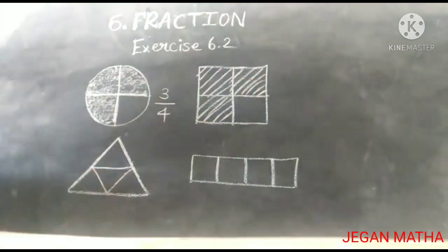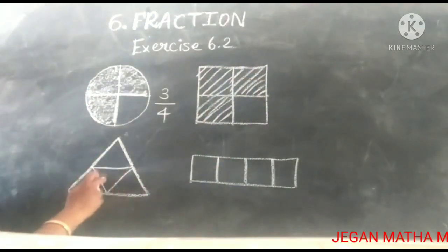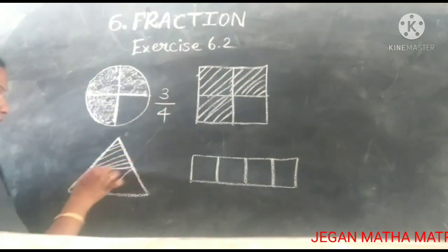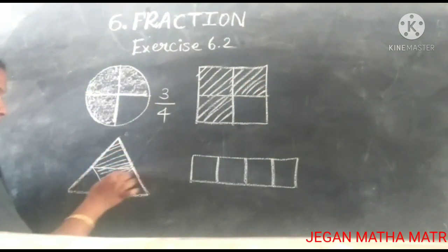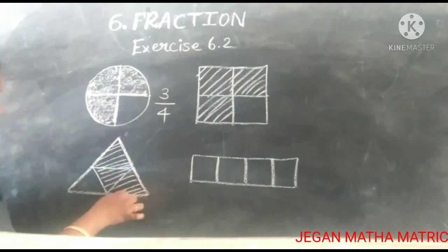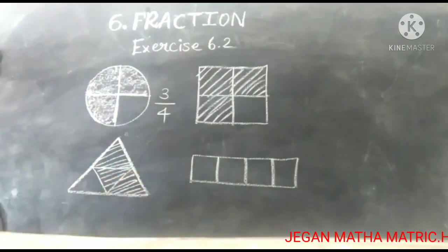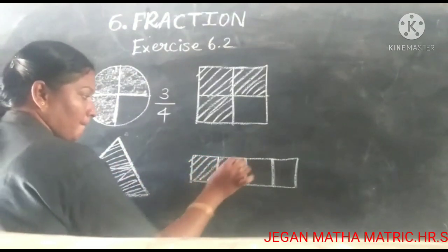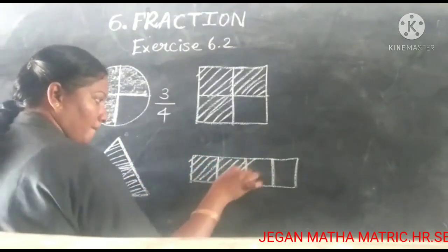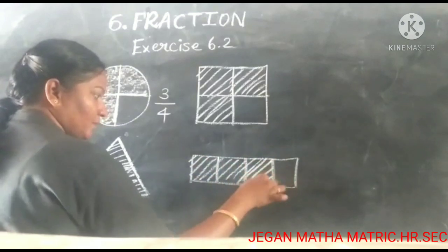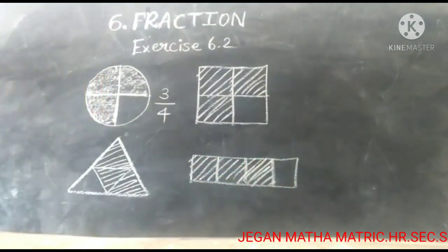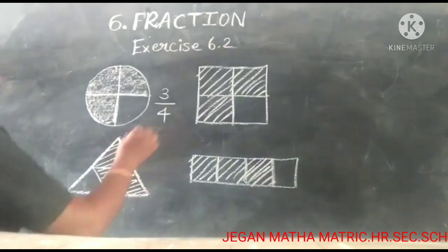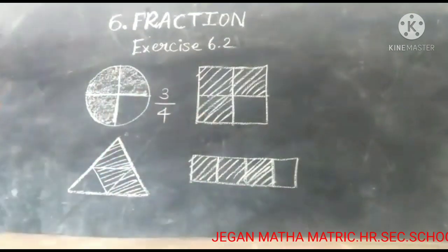So next one — three-fourths. One, two, three, four — four equal parts. You shade three parts. The next picture — the three-fourths parts are shaded. So this is three-fourths; all of these are three-fourths.